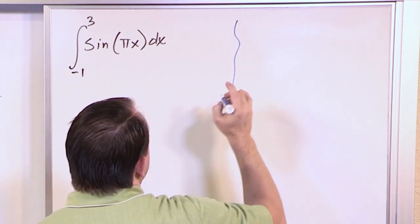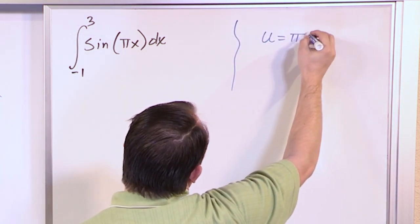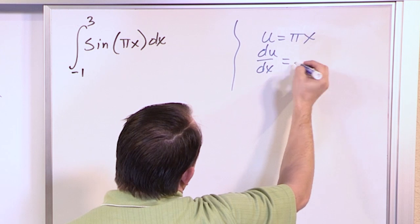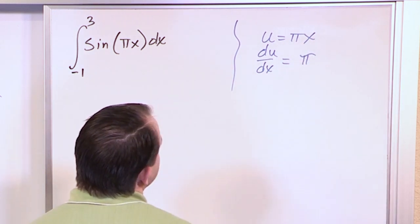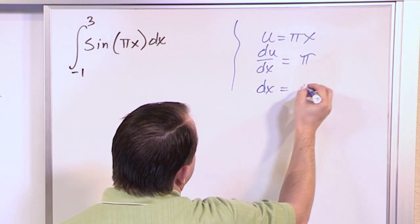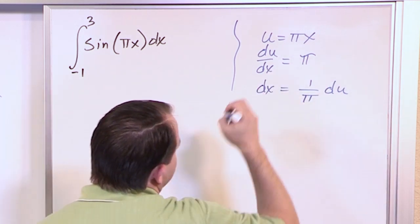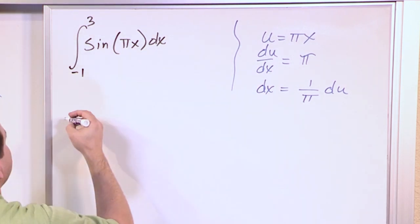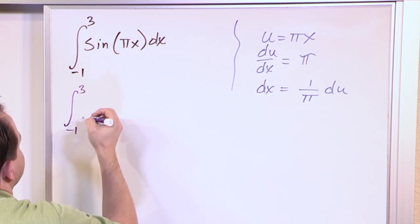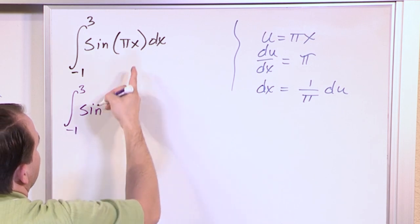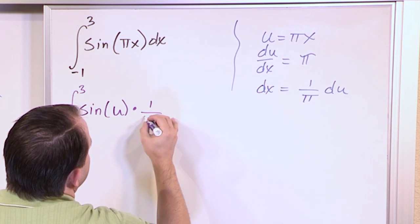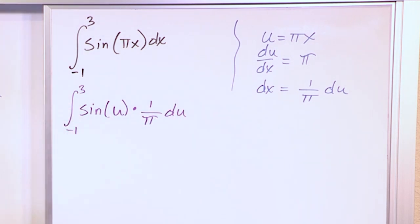Let's put it into a form we know. We set u equal to pi times x, so du/dx equals pi, and dx equals 1 over pi du. Substituting in, we have the integral from negative 1 to 3 of sine of u times 1 over pi du. Everything is in terms of u and du, which is exactly what we want.